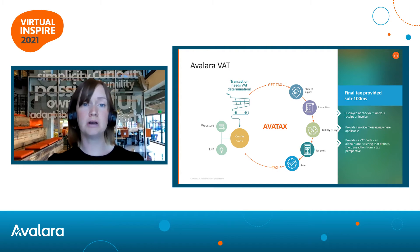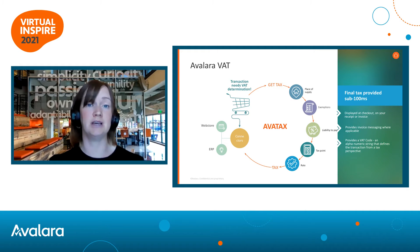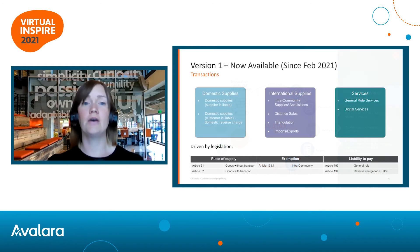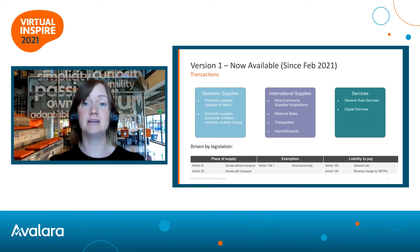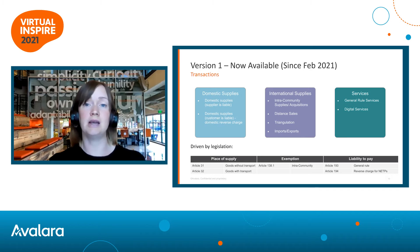So that's a bit about how the engine works. I do just want to quickly talk about some of the recent and also upcoming enhancements in AvaTax. As of February this year, we introduced version one of our VAT enhancements for the EU and UK. This covers three main areas: the first is domestic supplies, both where the supplier is liable and also where the customer is liable — so domestic reverse charge rules. The second is international supplies of goods, things like distance sales, intra-community supplies and exports, and also some more complex chain transactions, so triangulation is covered there now as well.